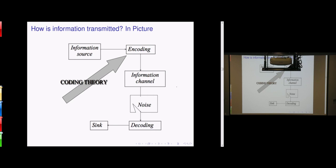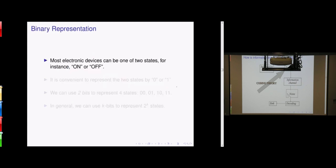Why is this important? In the next part, I will introduce some algorithms so that with some encoding, even if you have some noise and errors, the other party has a way to read off the correct information. The coding part means finding a clever way so that when the receiver gets the message, they can decode the correct information and anticipate some noise.